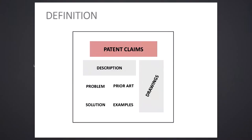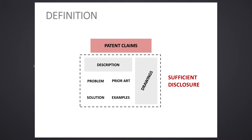This is how a patent looks. Patent claims are the core part of the patent, where you determine the features of the protected technical solution. Patent claims are supported by description and drawings. In the description you present the problem, the solution, the prior art, and examples. Patent applications must comply with the requirement of sufficient disclosure — also called enablement. With this disclosure, a person skilled in the art should understand the technical teaching and should be able to carry out the protected solution.